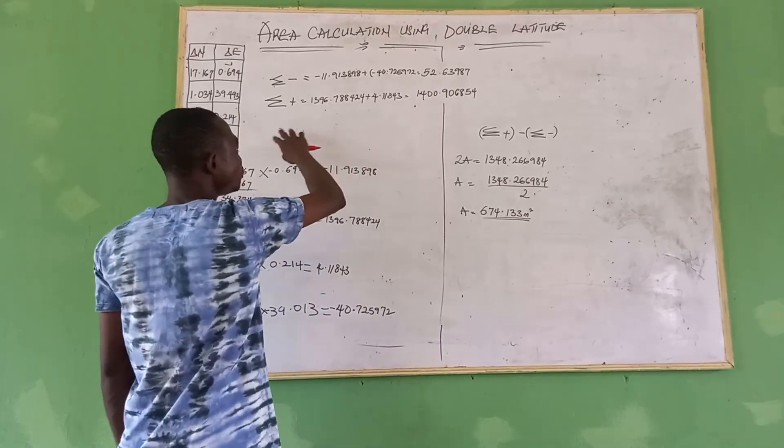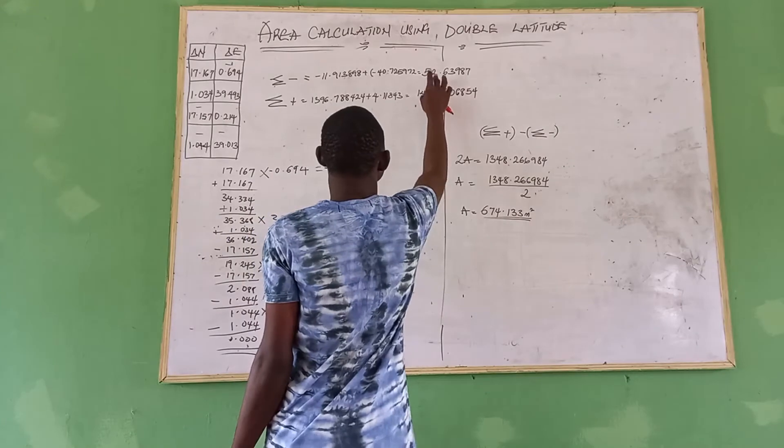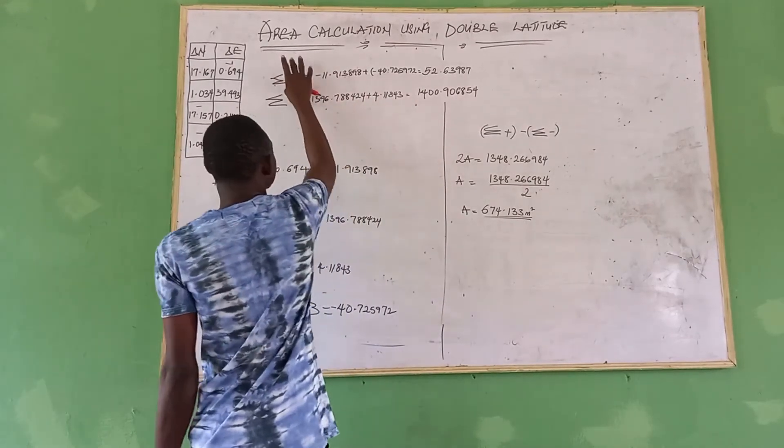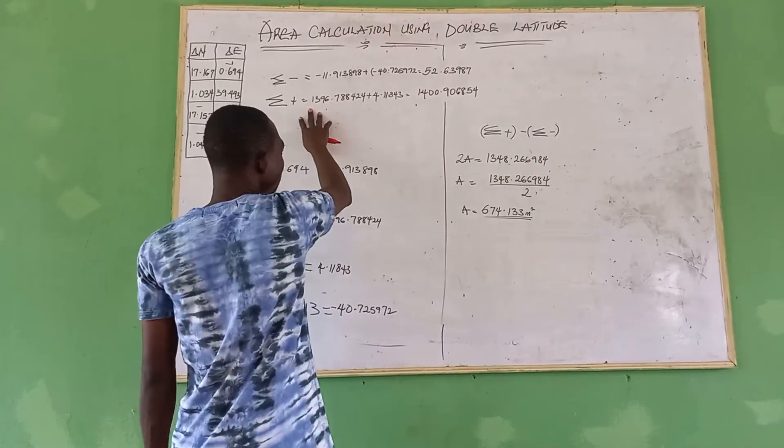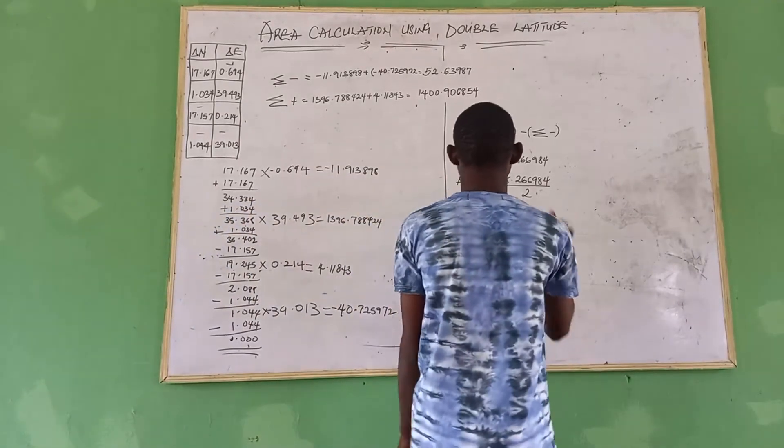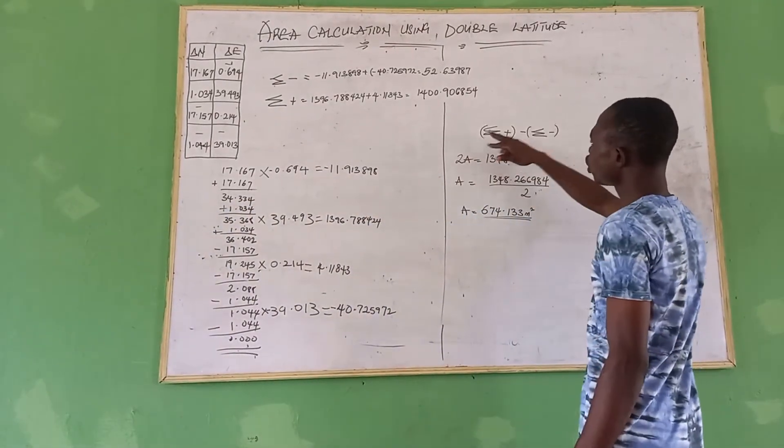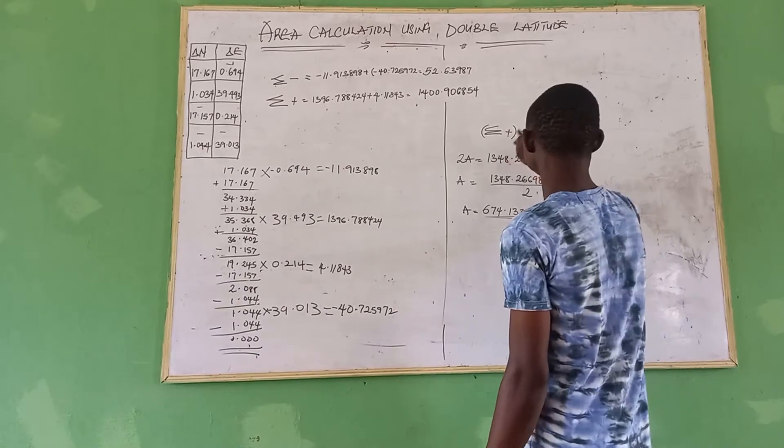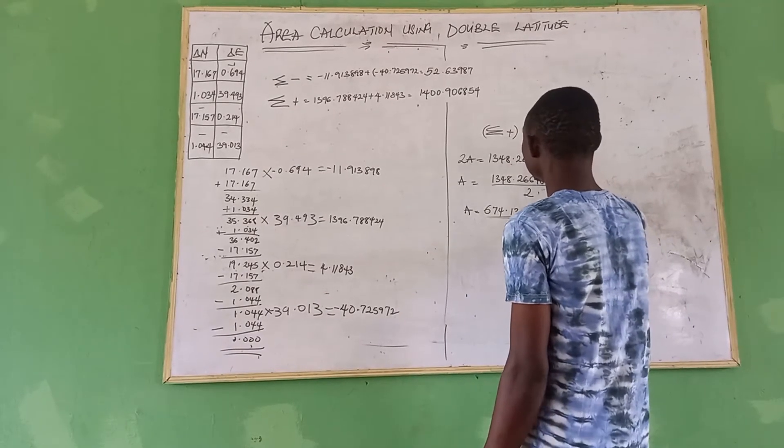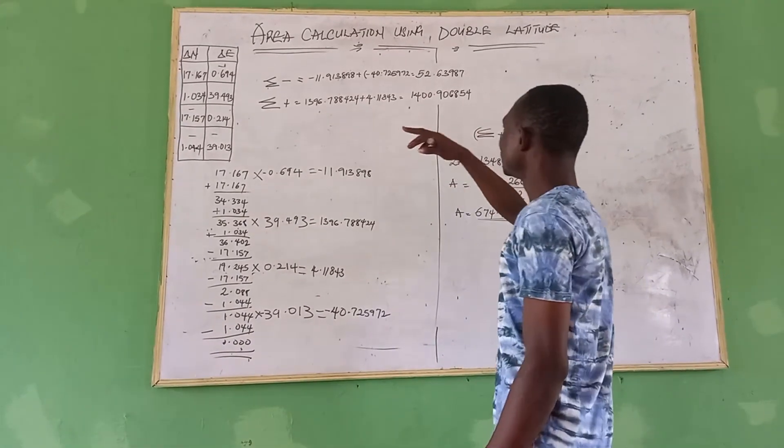Then after you have the summation of your all negative, summation of all positive, then you come here. That you now say summation of your positive minus summation of your negative.